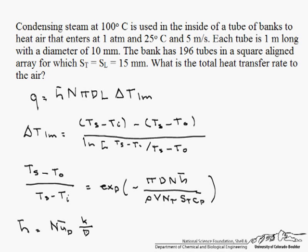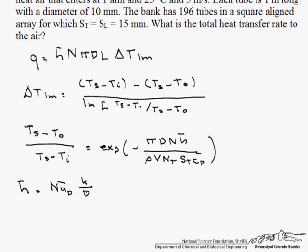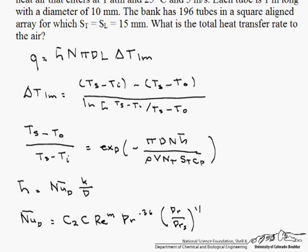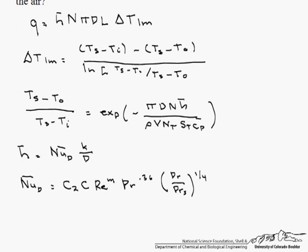We have to look up the proper correlation for our Nusselt number. Here we use the Zukauskas correlation, which says the average Nusselt number is a correction constant C_2 — for anything that has fewer than 20 tubes in the longitudinal direction, which we do (we have 14) — times a constant C based on the Reynolds number, times Reynolds raised to the M, where M is also based on the Reynolds number, times Prandtl to the 0.36, and then Prandtl divided by Prandtl at the surface to the one-fourth power.